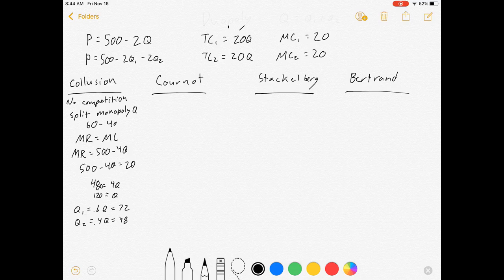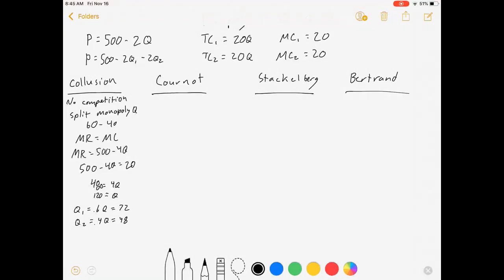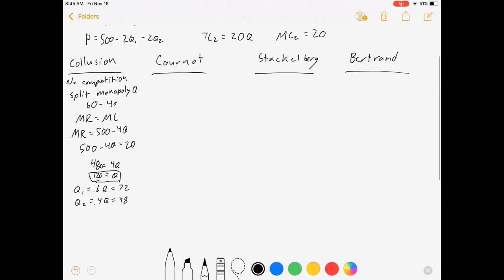There you go, we've solved for their quantities. Most examples you're going to see they do it 50-50 where they're symmetric firms, but I figured you might as well know they're splitting up this market quantity. For price, we know price is 500 minus 2Q, that's 500 minus 2 times 120, which is 500 minus 240 equals 260. So we got quantities and prices under collusion.